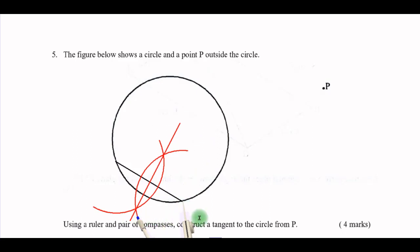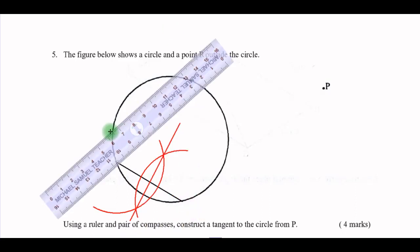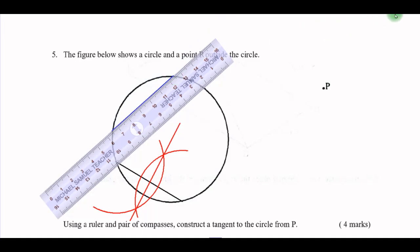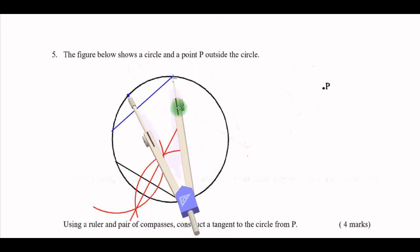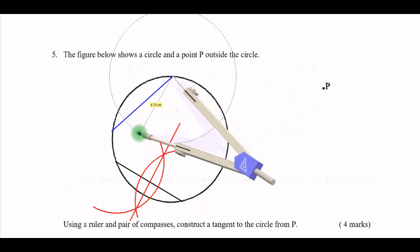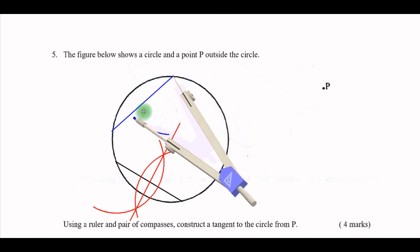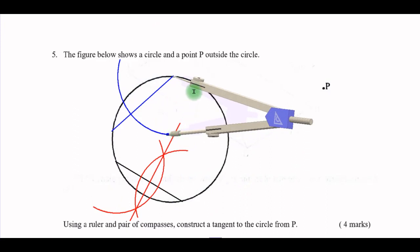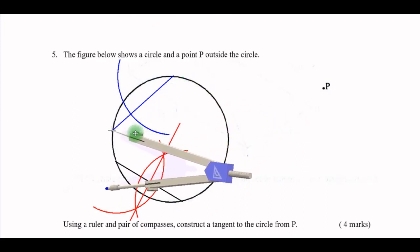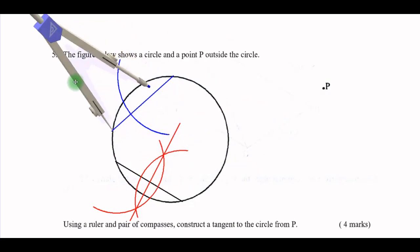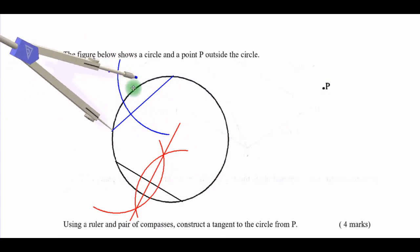Now I also draw another chord. From there I bisect this chord again. I choose a length more than half, then put a mark at this particular point. I also use the other endpoint as the center, maintaining the same length or radius.